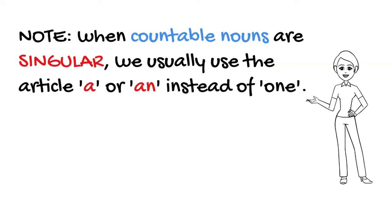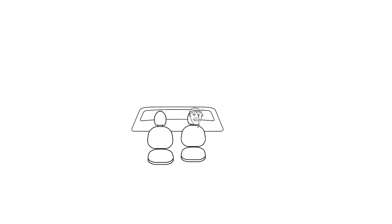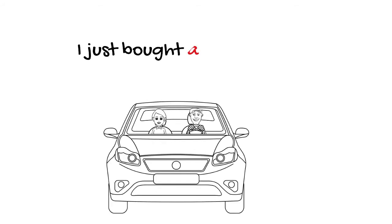when countable nouns are singular, we usually use the article a or an instead of one. I ate an apple earlier today. I just bought a new car.